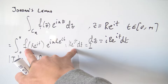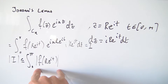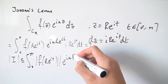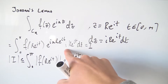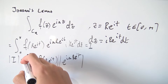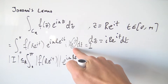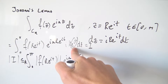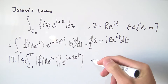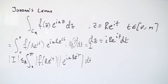Now we have the absolute value of f(re^(it)) multiplied by everything else. Since everything inside is being multiplied together, we can split the absolute values up. Taking the absolute value of i is just 1, the absolute value of r is just r, so we bring that to the front. The absolute value of e^(it) is always equal to 1 since we're just on the unit circle, so we can ignore that, leaving us with dt.